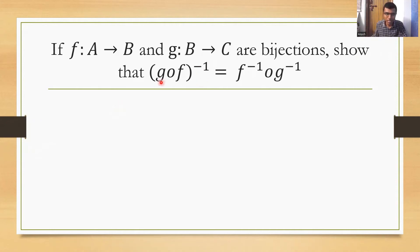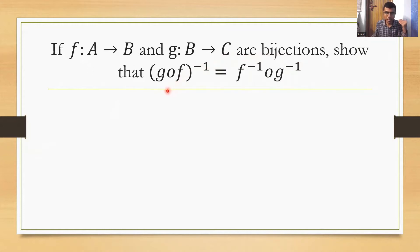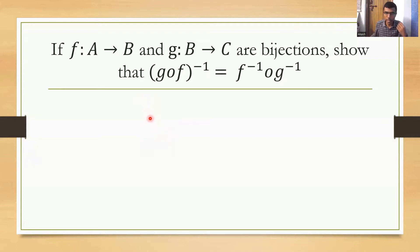Hello learners. Let us show that (g∘f)⁻¹ is equal to f⁻¹∘g⁻¹, given that f maps A to B and g maps B to C are bijections. One request — you don't have to mug up this theorem. I'll explain it in a step-by-step manner, so listen attentively so that you can do this on your own. Understand the flow and the logic.